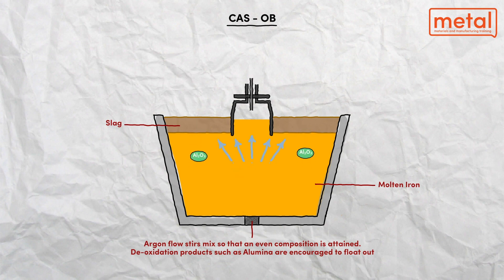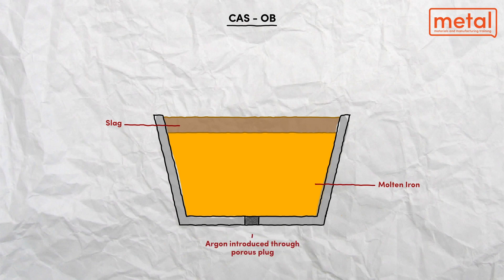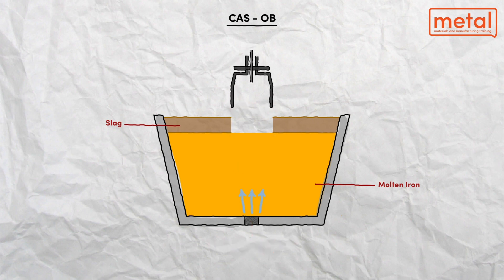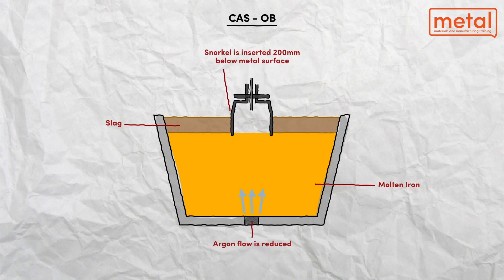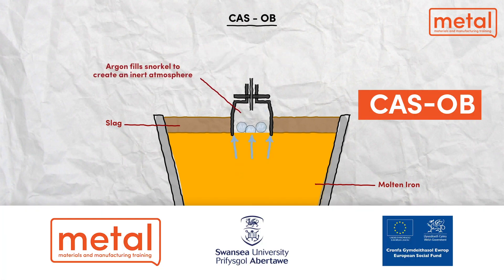After this, homogenisation is carried out of the liquid steel for about four to five minutes. Then argon flow is reduced further for taking a sample and measuring the temperature of the liquid steel. The result of the temperature measurement is used to calculate the required amount of aluminium metal and oxygen for chemical heating.